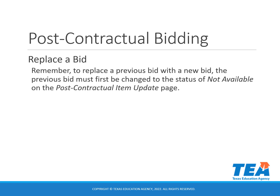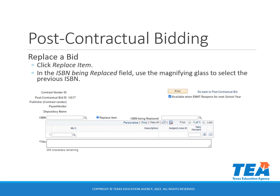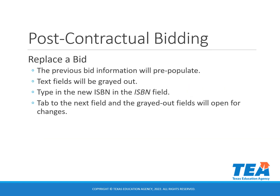Now we will go over replacing a bid. To replace a previous bid with a new bid, the previous bid must first be changed to the status of not available on the post-contractual item update page. You will click replace item, then in the ISBN being replaced field, use the magnifying glass to select the previous ISBN. The previous information will pre-populate, but the text fields will be grayed out, so you will need to type the new ISBN into the ISBN field, then tab to the next field and the grayed-out fields will open for changes.